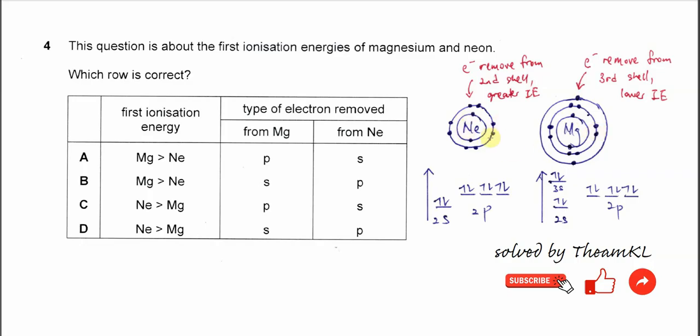Just because the neon is in period two, so it has these two electron shells and magnesium is in period three.